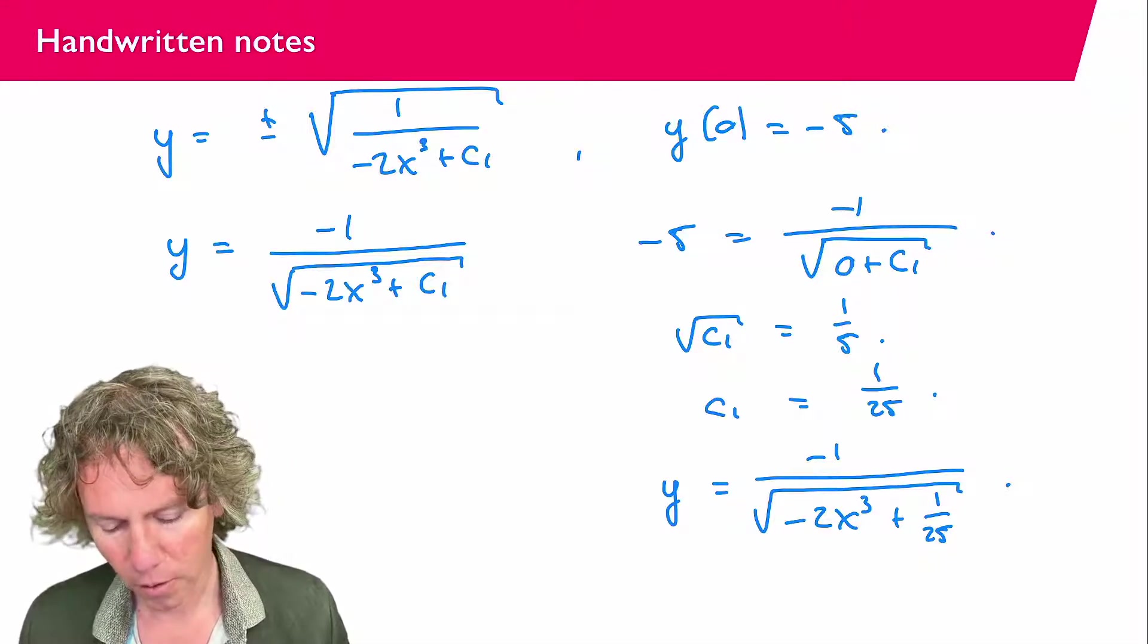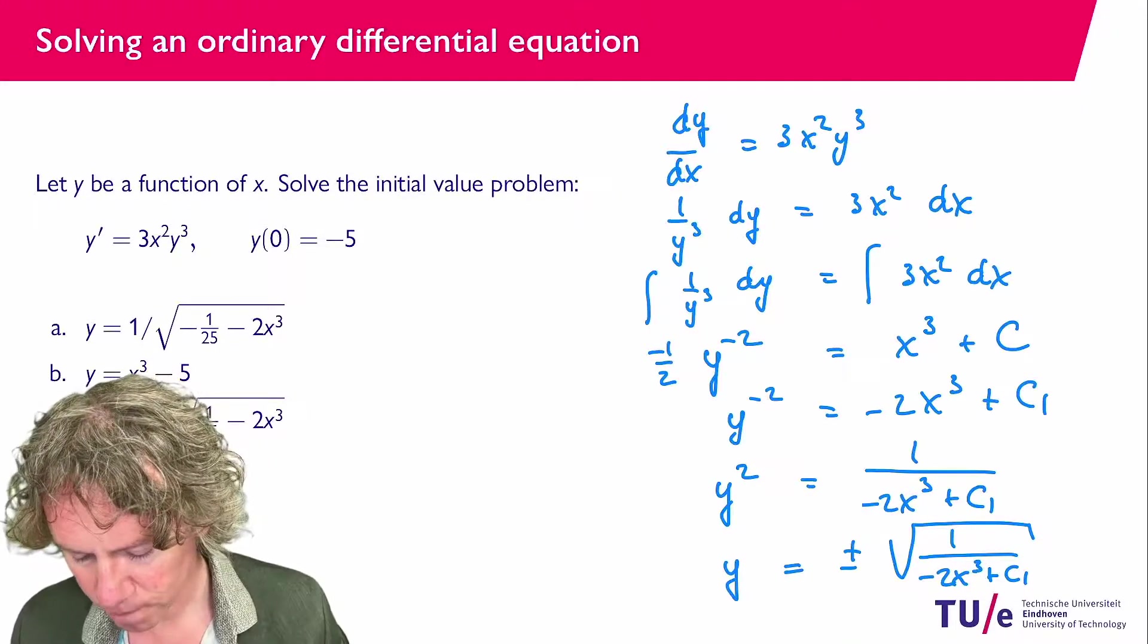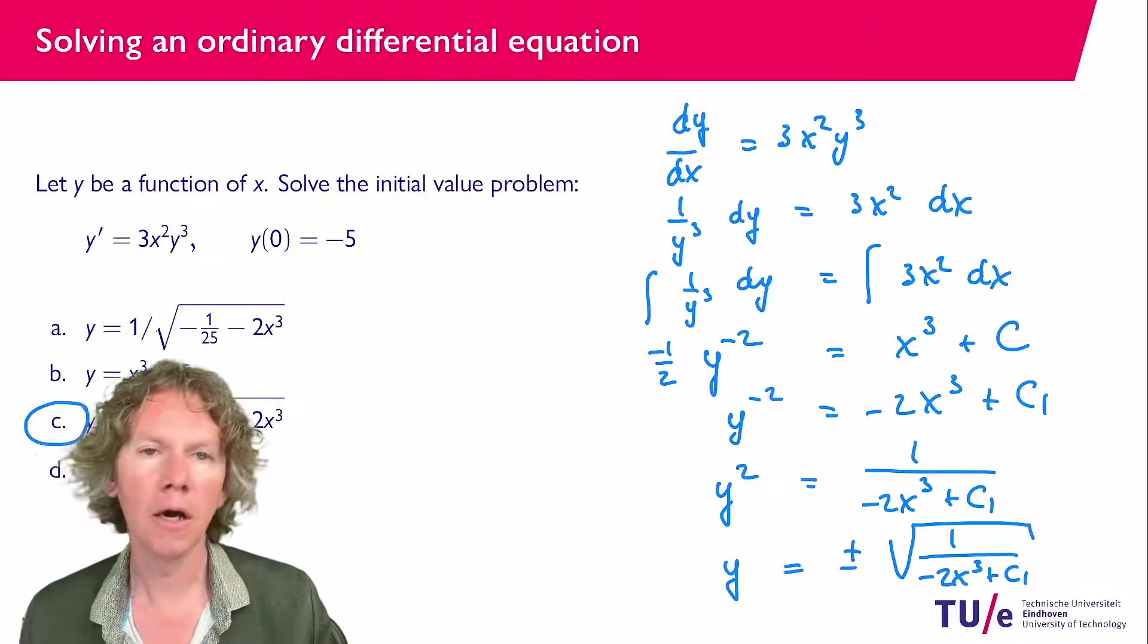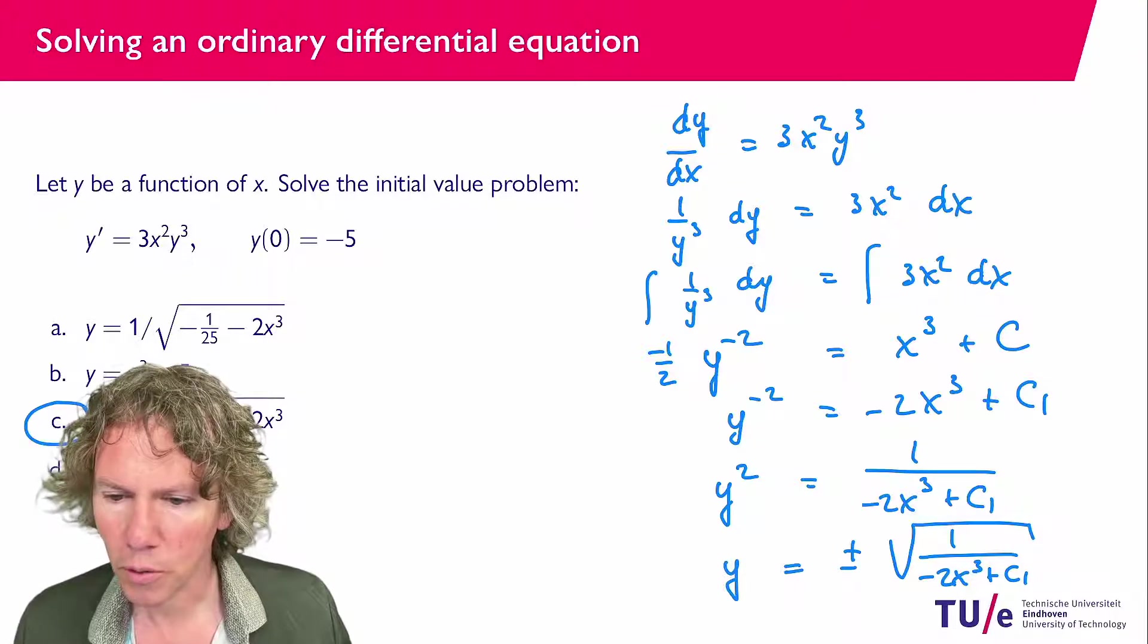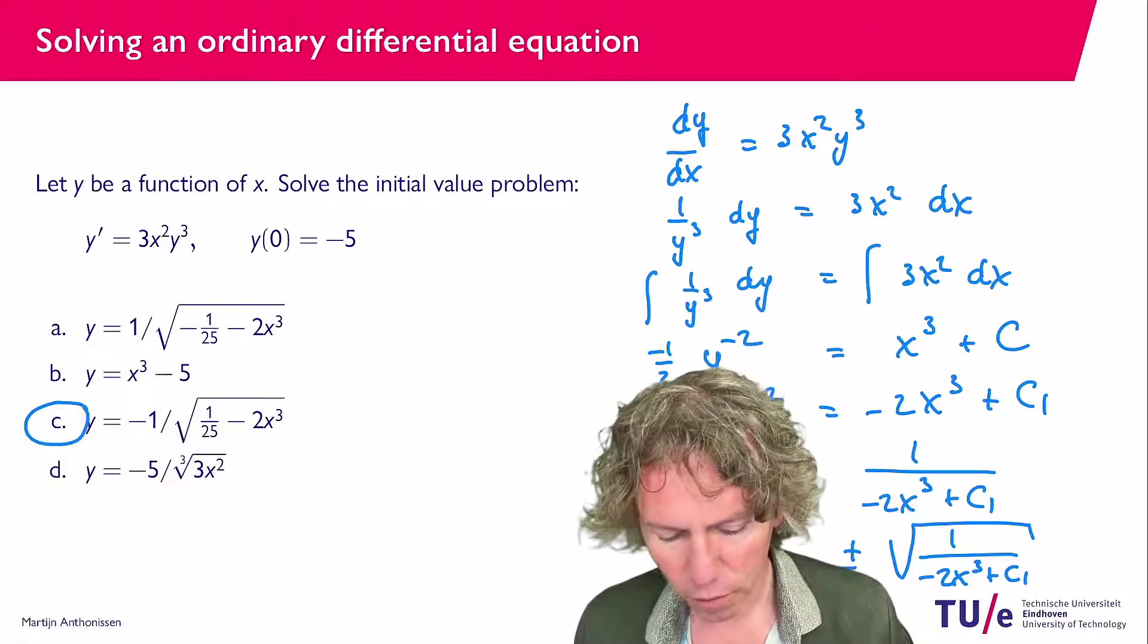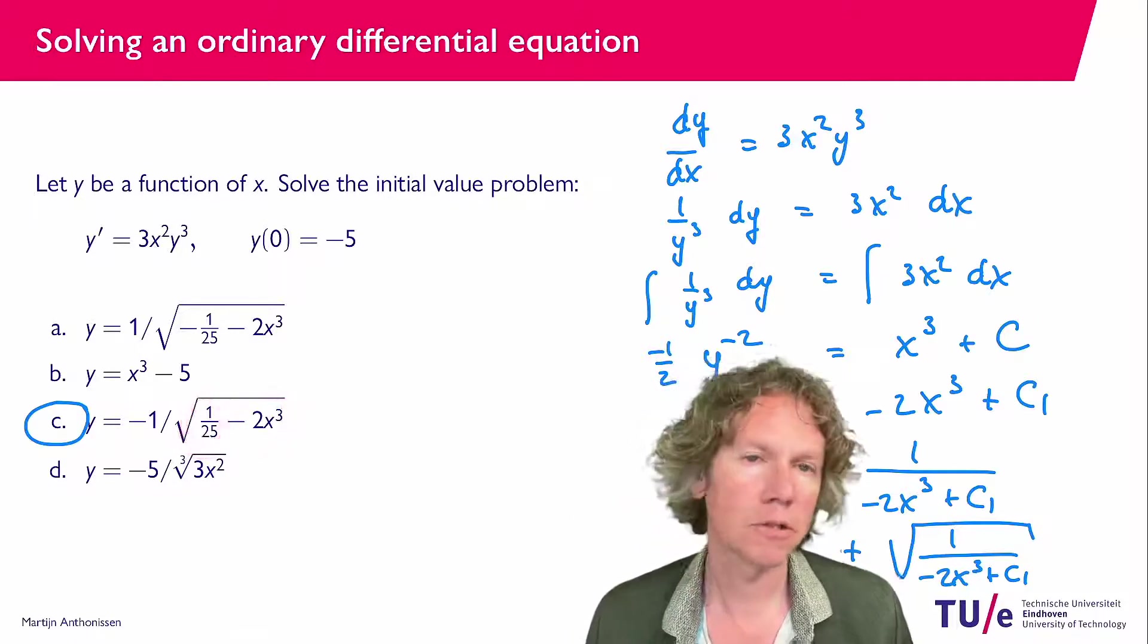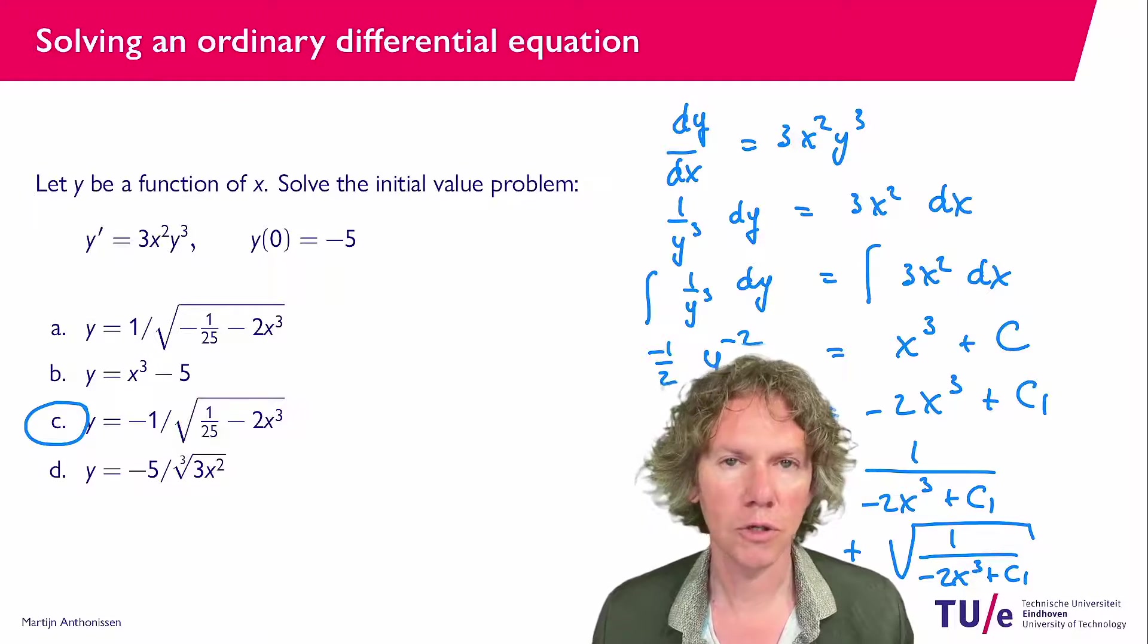So let's have a look at the previous slide to see if the answer is indeed among the options given there and we see that indeed we have answer c is the same minus 1 over the square root and I just swapped around the 1 over 25 and minus 2x to the power 3 but that's the same answer so c is the correct answer to this question. I hope it was all clear and I'll see you in the next one.